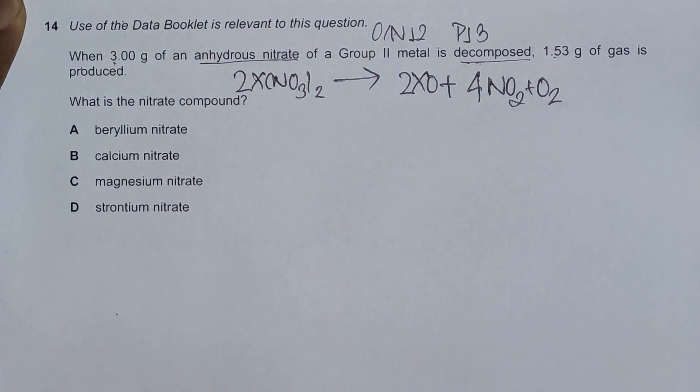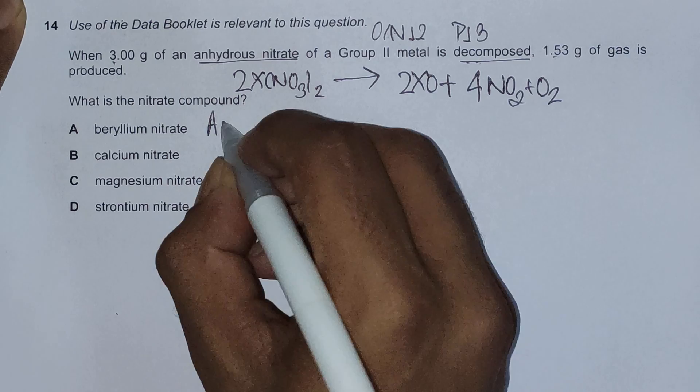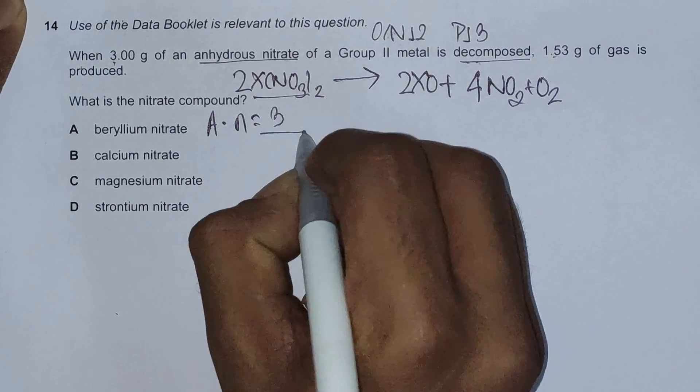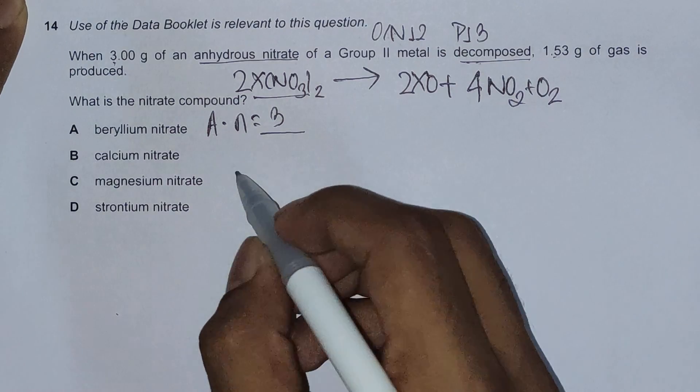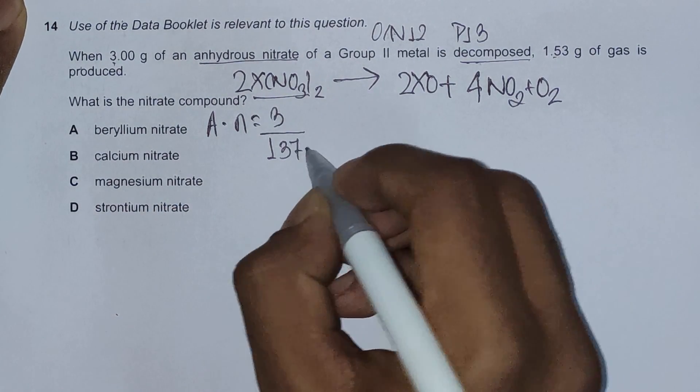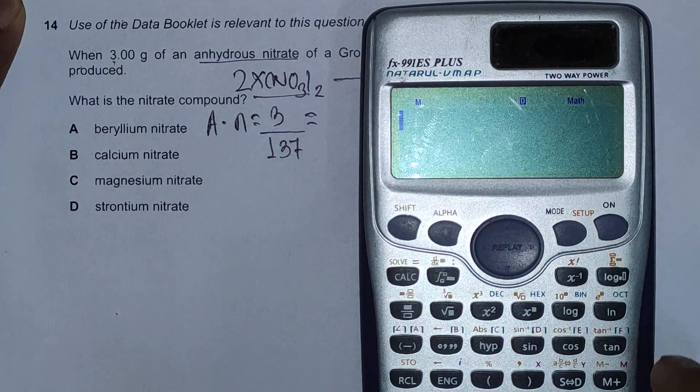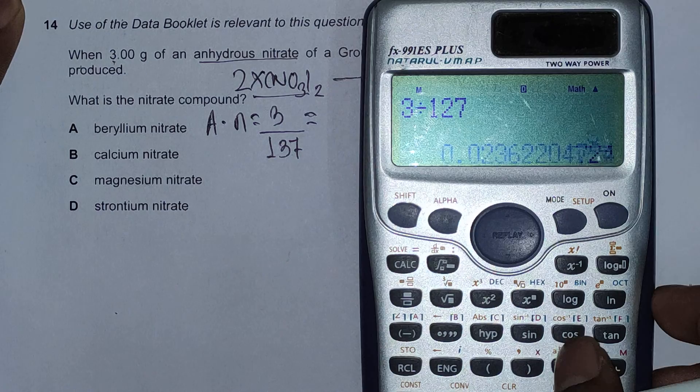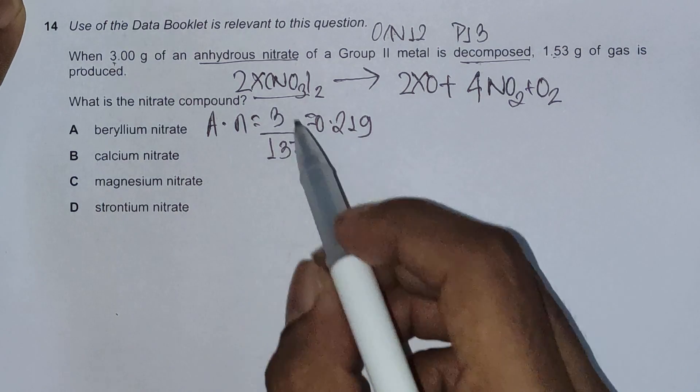Now plugging in the same equation for options A, B, C, and D. Checking for option A, we have moles of the metal nitrate is 3 divided by its Mr value. Mr is beryllium 9 and NO3 is 124, so 9 plus 124 is 133. Oh I'm sorry, the Mr value is 137 for this, which is 3 divided by 137 equals 0.0219.